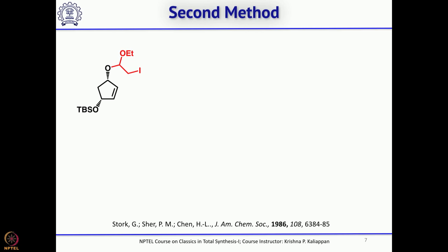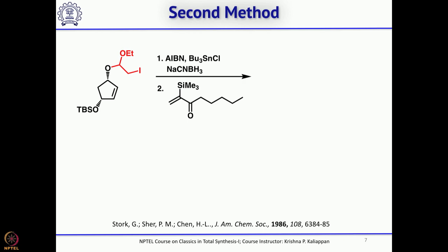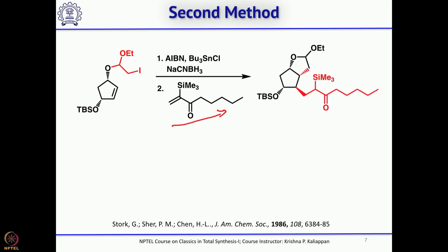He also attempted this same transformation by a second method where the acceptor is different. He took the radical precursor under the same conditions, except that the acceptor was an alpha-beta unsaturated ketone. Earlier he had tried with tert-butyl isocyanide to introduce the cyanide, then reduced to aldehyde for further homologation. Now he wanted to directly trap that radical with the alpha-beta unsaturated ketone — and he succeeded.